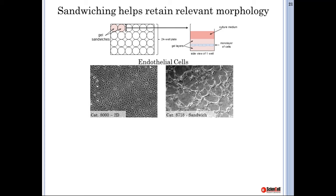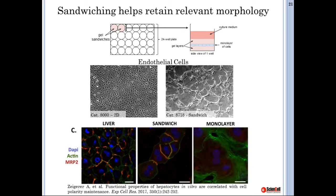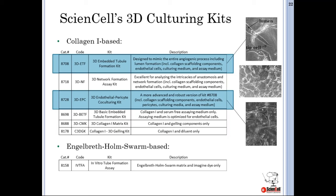One of the main advantages of culturing cells in a gel sandwich is producing morphology much closer to in vivo phenotypes compared with traditional 2D culturing. This is true for cell types other than endothelial cells. For example, hepatocytes cultured in a sandwich assay have been shown to form bile canaliculi, highlighted here by MRP2 staining in green, whereas hepatocytes cultured using traditional 2D methods do not. Similar studies have shown improved and increased hepatocyte function when cultured in a collagen gel sandwich.